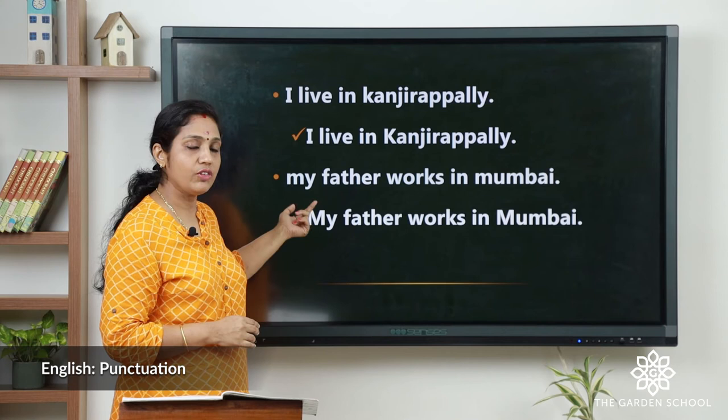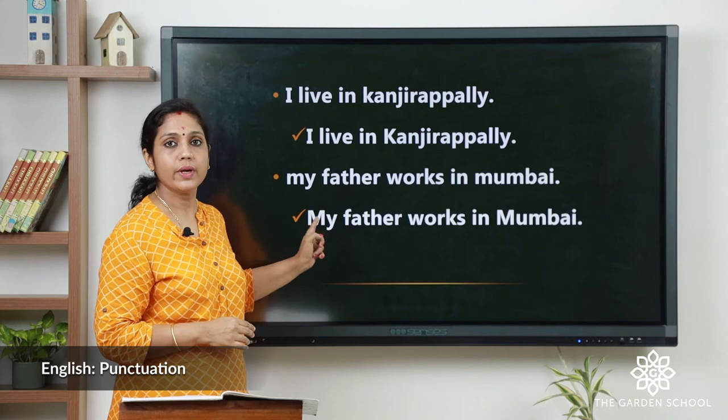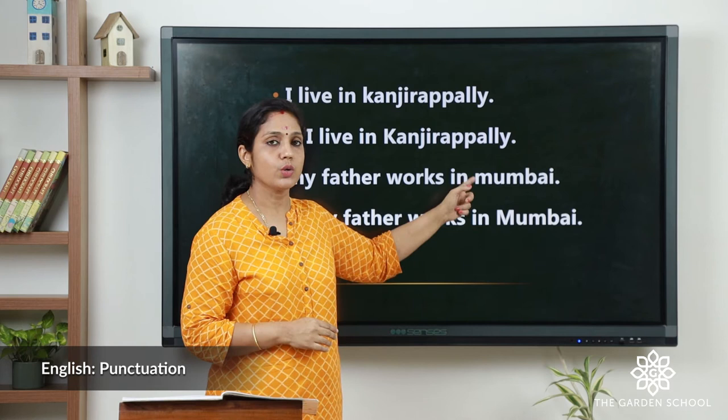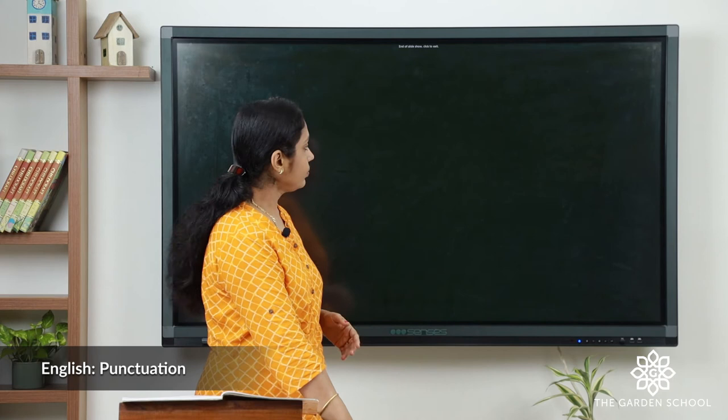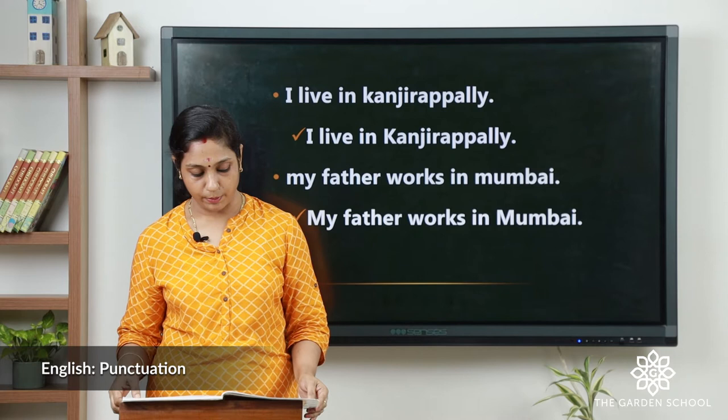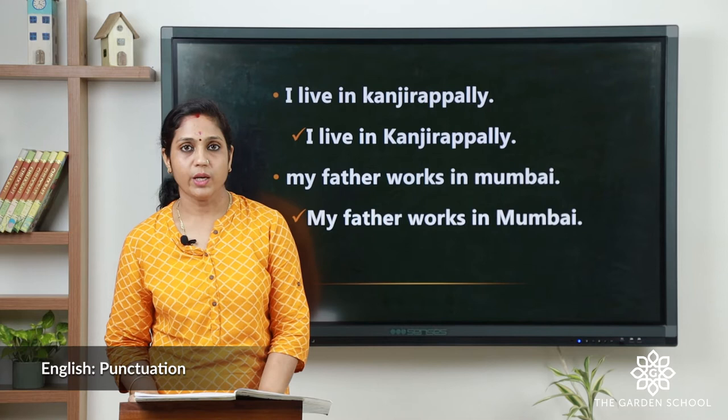Second sentence: 'My father works in Mumbai.' Here the first word is 'my,' and the letter 'M' is written as a small letter — we have to write 'M' as a capital letter. Mumbai is a place, so that 'M' also we have to write in a capital letter: 'My father works in Mumbai.' This is how we rewrite the sentence to make it a proper sentence.